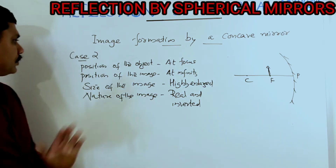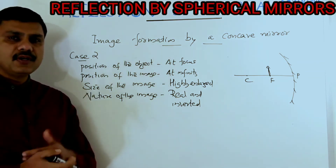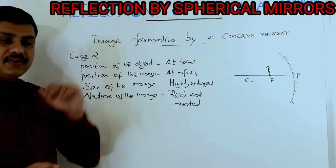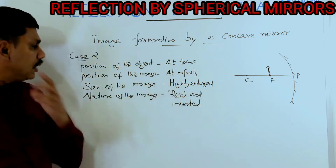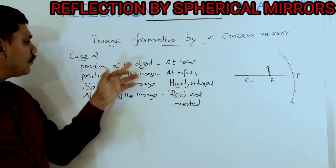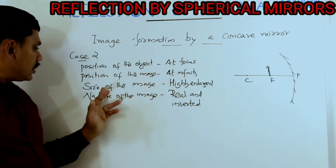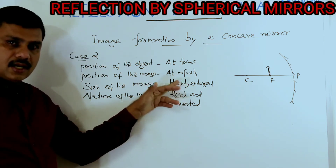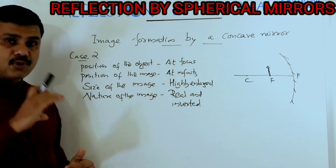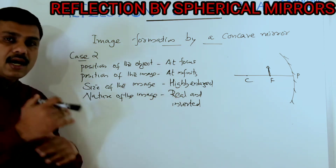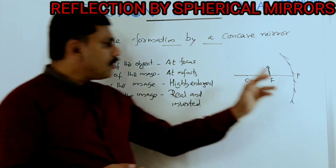Case two is just the opposite of case one. In case one, the object was at infinity and the image formed at the focus. Here the situation is reversed: the position of the object is at the focus and the image forms at infinity. The size of the image is highly enlarged — in case one it was highly diminished, here it is highly enlarged — and the nature is real and inverted.